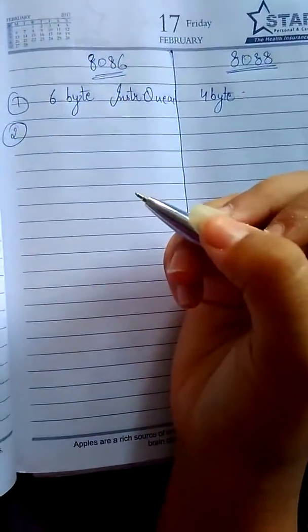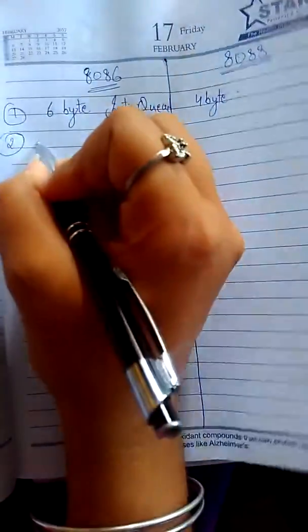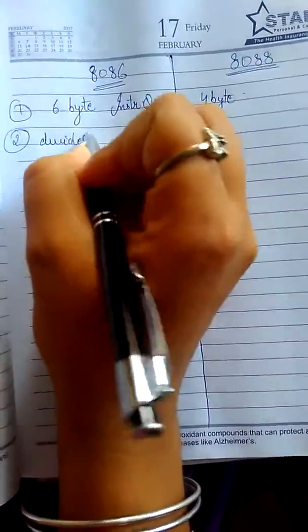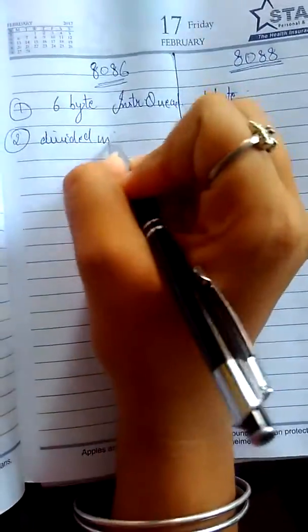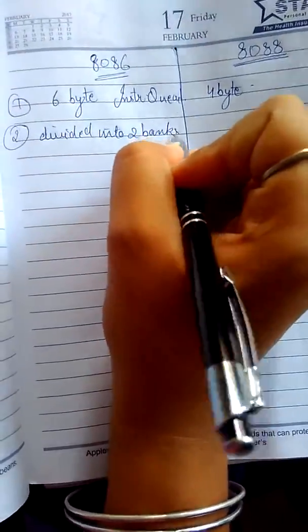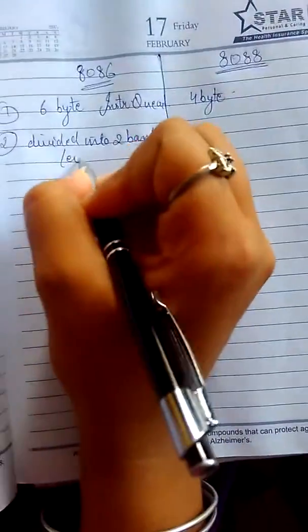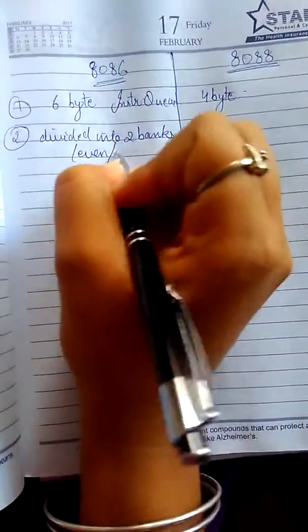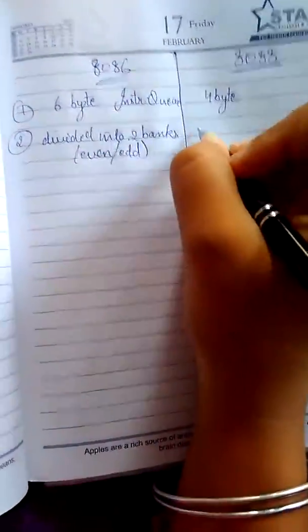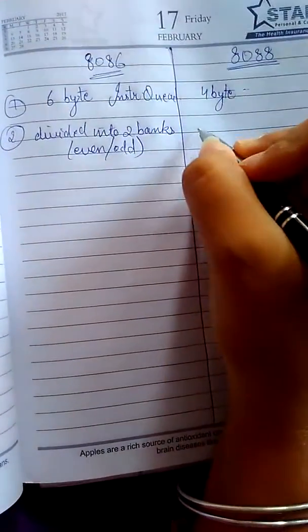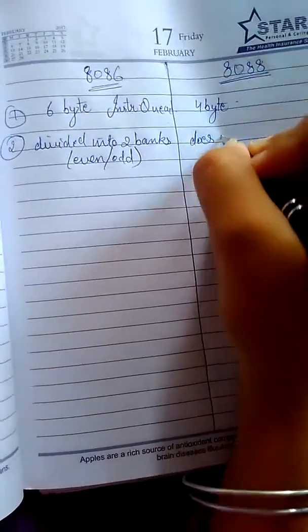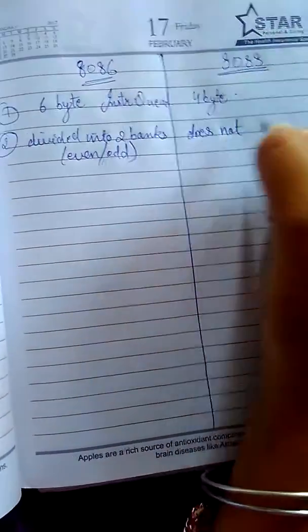The 8086 is divided into 2 banks — an even bank and an odd bank — while in the 8088 it is not divided into 2 banks.